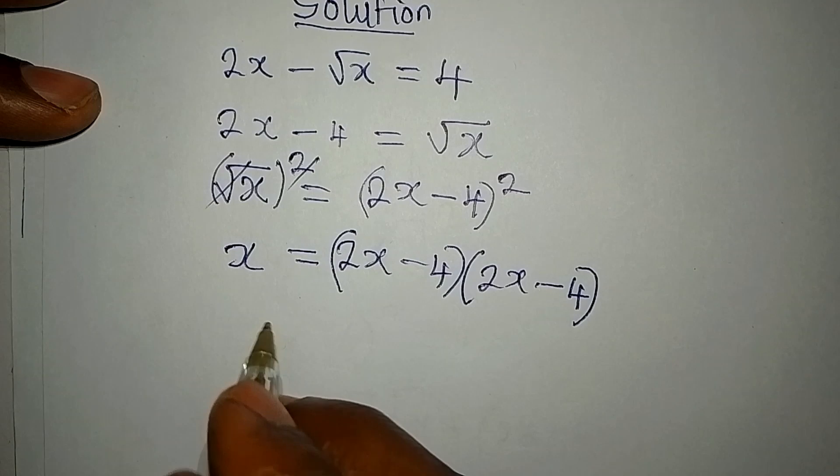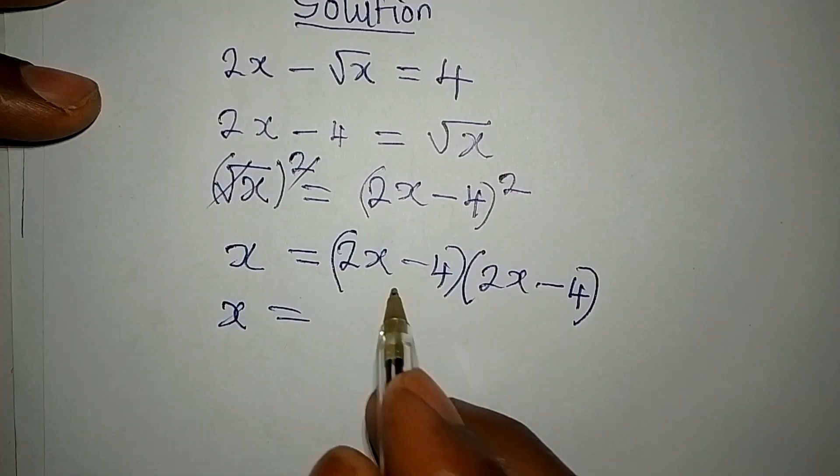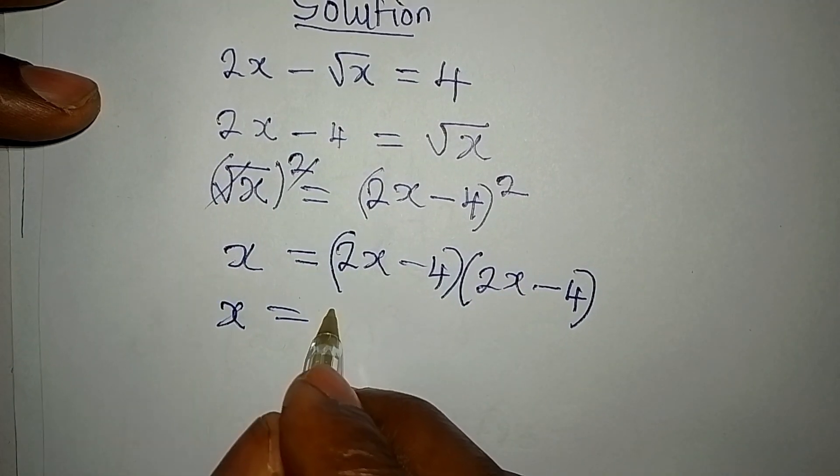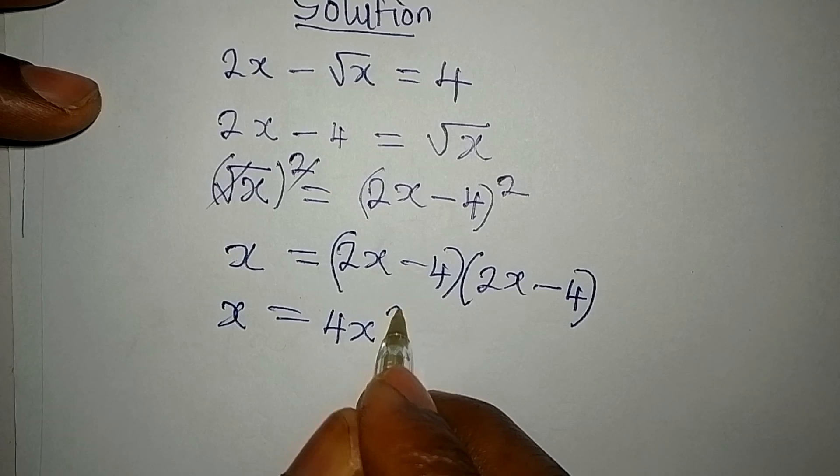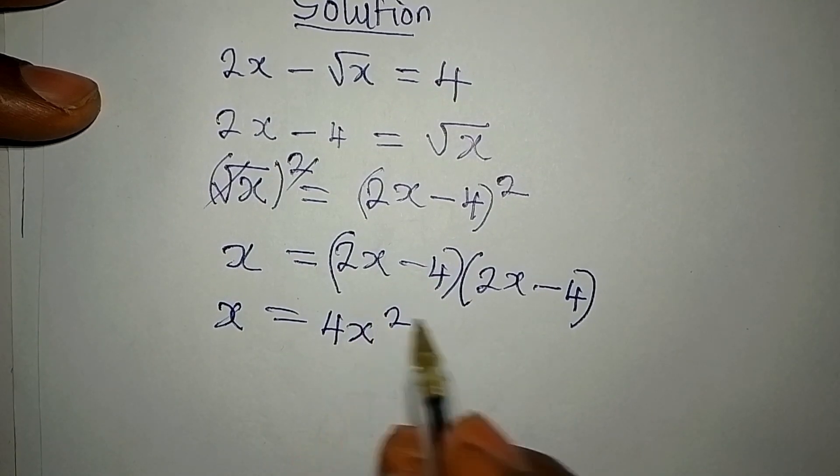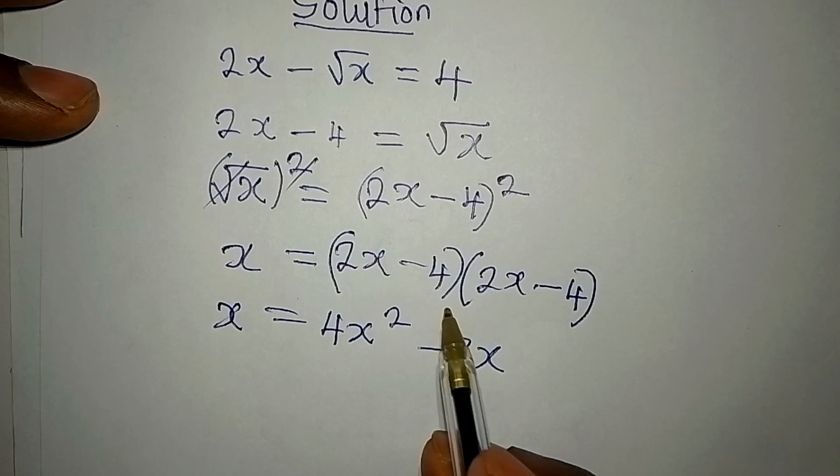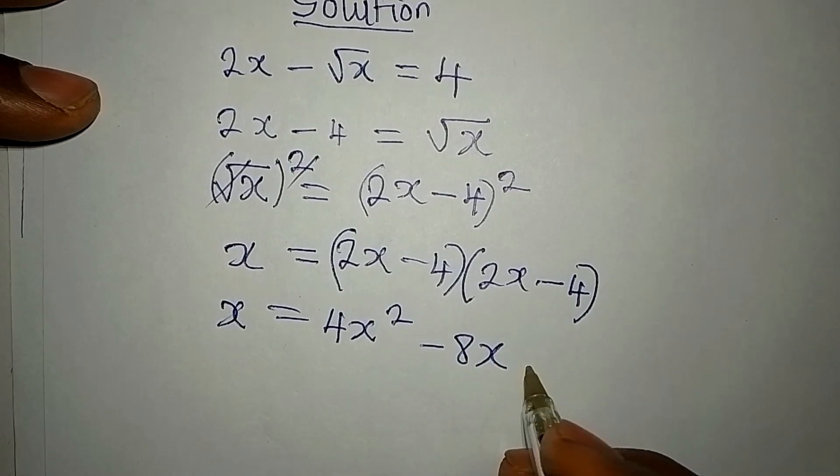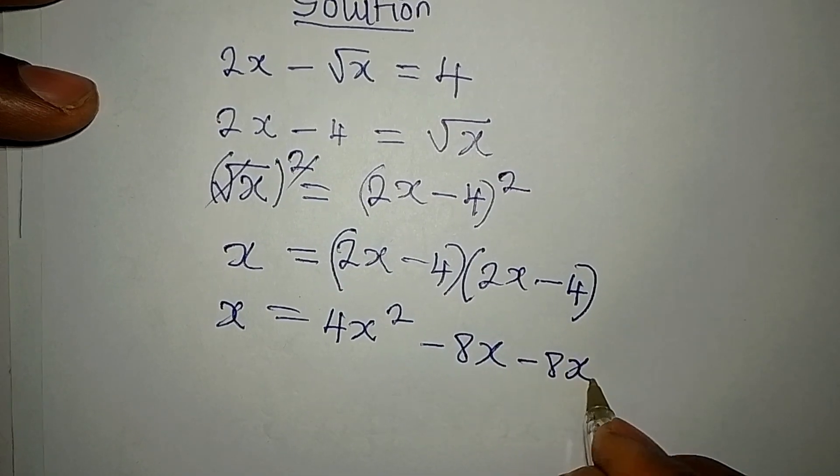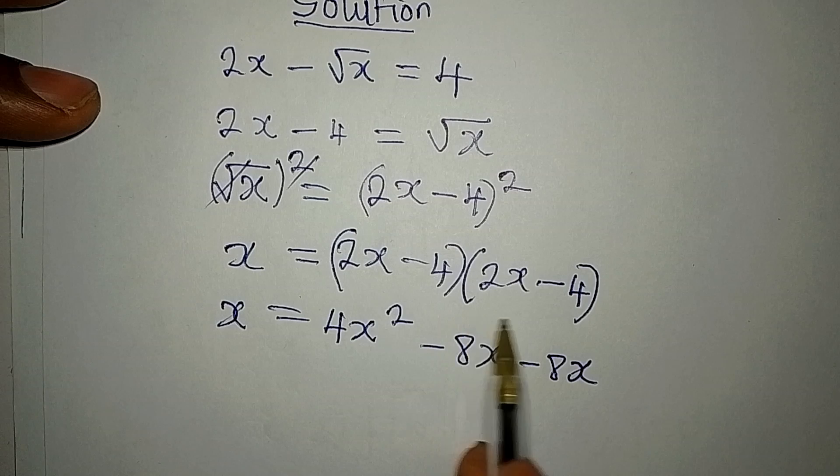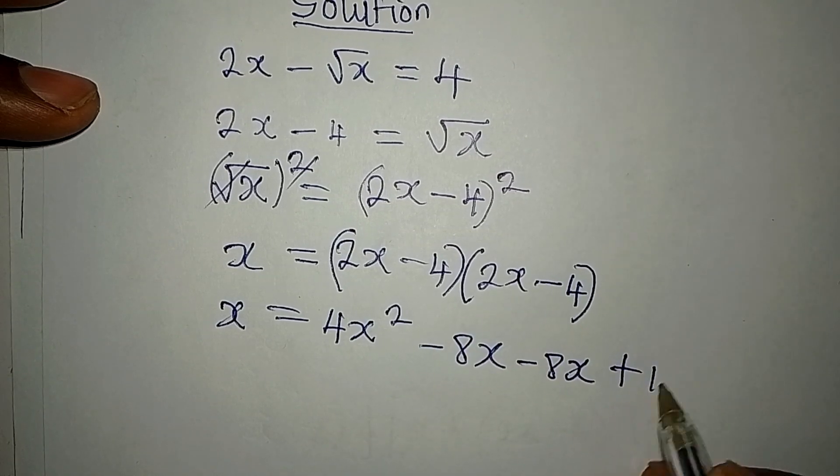x will be equal to 2x times 2x, that would be 4x squared. 2x times minus 4, that would be minus 8x. Minus 4 times 2x, that would be minus 8x again. And minus 4 times minus 4, that would be plus 16.